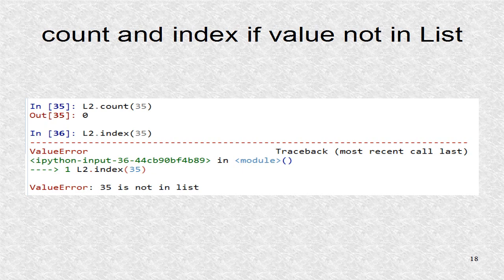If count is used with a value not in the list, it returns zero, while index will return an error. Errors are also known as exceptions.